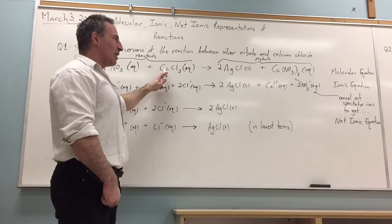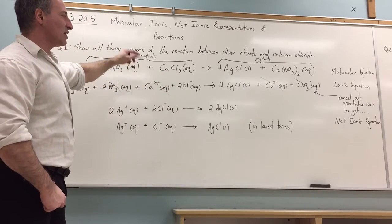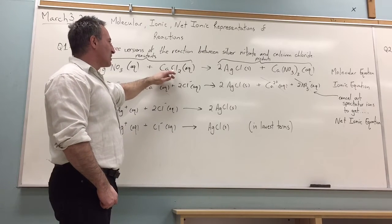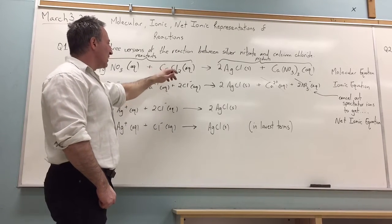Calcium is a group two metal, and the alkaline earth metals, they all like to have a plus two charge, whereas chlorine is a halogen and it likes to have a minus one charge.